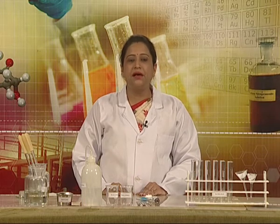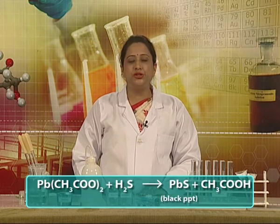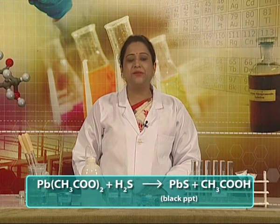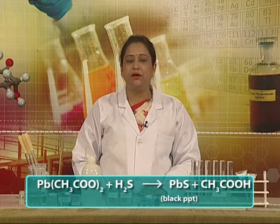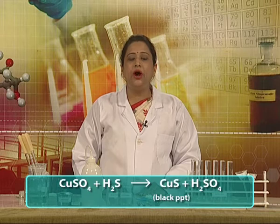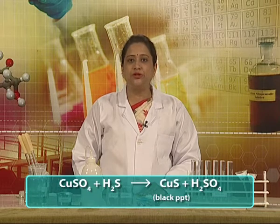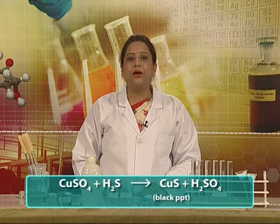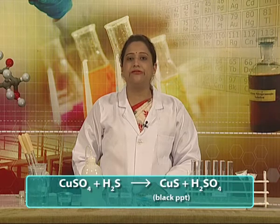When we have lead ions and we add H2S gas, a black precipitate of lead sulfide is formed. On the other hand, with copper ions when H2S solution is added, we get a black precipitate of copper sulfide.